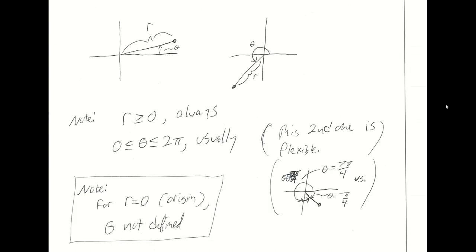Here are a few sketches of points and what r and theta look like in polar. Theta equal to zero gives the positive x-axis, theta equal to pi over two gives the positive y-axis, theta equal to pi gives the negative x-axis, and theta equal to 3 pi over 2 gives the negative y-axis. For a point in the third quadrant, theta is between pi and 3 pi over 2. R is always greater than or equal to zero — it is a distance. We generally think of theta as being between zero and 2 pi, though that rule is flexible.